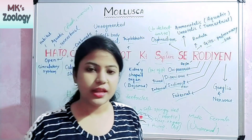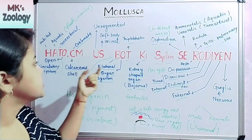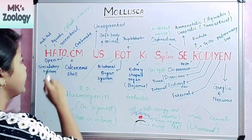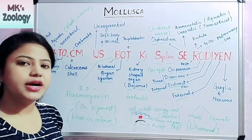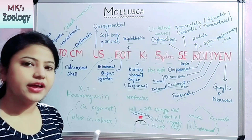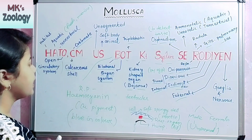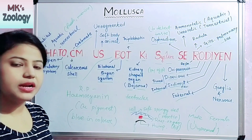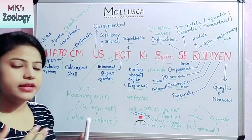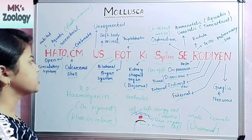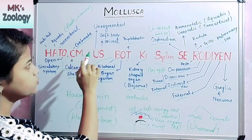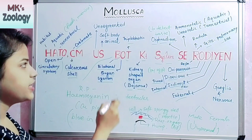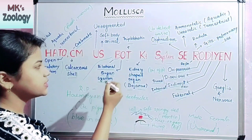I hope you remember all the points. Let's repeat it again. In the recap: the outer layer is the shell; C means coelomate and in the coelom the blood is present which is blue in color. U means unsegmented body of Mollusca. S means soft-bodied animal. B means bilateral; O means organ system; and T means triploblastic.